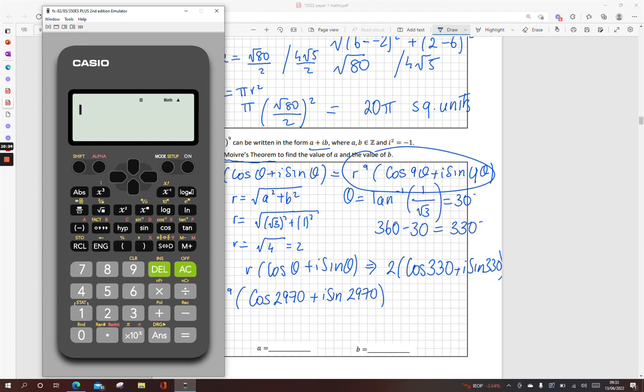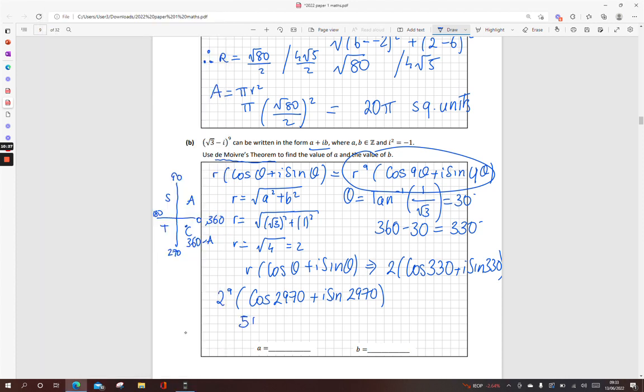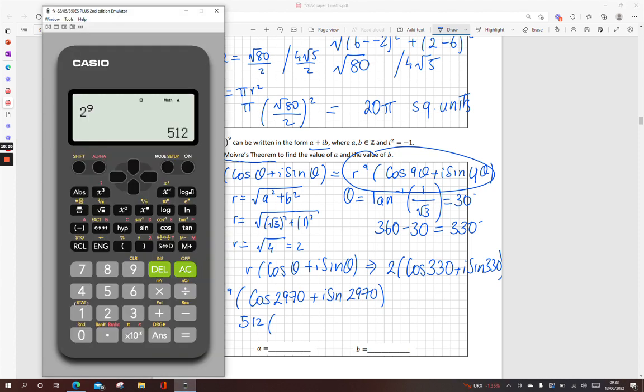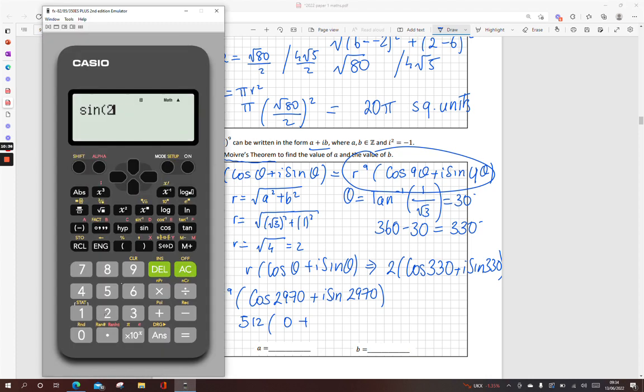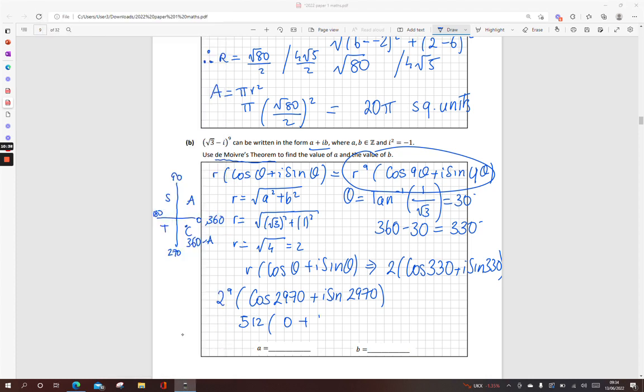And then work out each of those. 2 to the power of 9 is 512. Cos 2970 is 0. Plus sine 2970 times 1i. And I'll multiply that out. I get 512. Plus 512i. Oh, sorry. 0 times 512. Anytime I get cocky, I make wee mistakes. 0 plus 512i. My a is 0. And my b is 512.